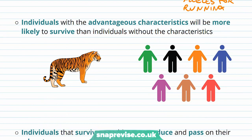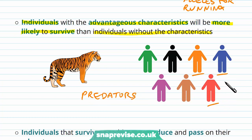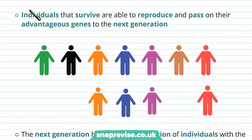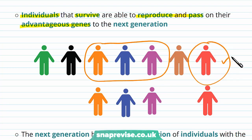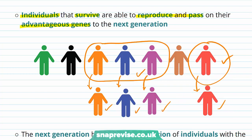Those with the advantageous alleles, or the advantageous characteristics, are more likely to survive than the individuals without these characteristics. If predators are spreading through Africa and picking humans off, those that have the more successful allele are more likely to run away and survive, while those without are more likely to die. The individuals that end up surviving are then able to reproduce and pass their advantageous genes on to the next generation. Those that didn't have the advantageous alleles likely died off and never got the opportunity to reproduce.